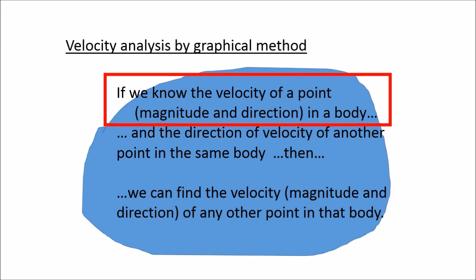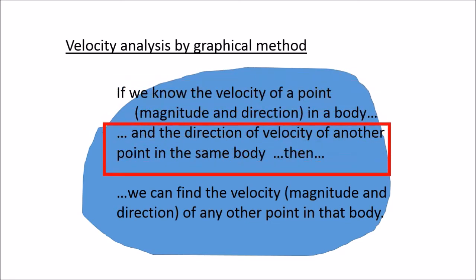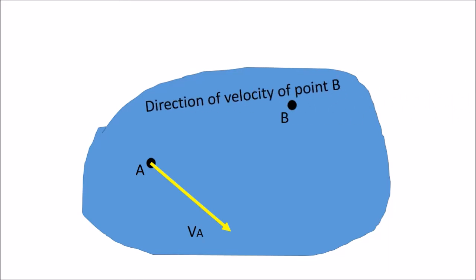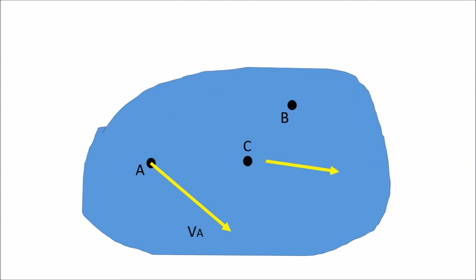In velocity analysis by graphical method, we understand that if we know the velocity of a point — that means the magnitude and direction — in a body, and also know the direction of the velocity of another point in the same body, then we can find the velocity, meaning the magnitude and direction, of any other point in that body. So with point A moving with velocity vector A, and point B in the same body with the direction given, we can determine the velocity of C, D, B, and also E, which is rigidly connected to the same body.